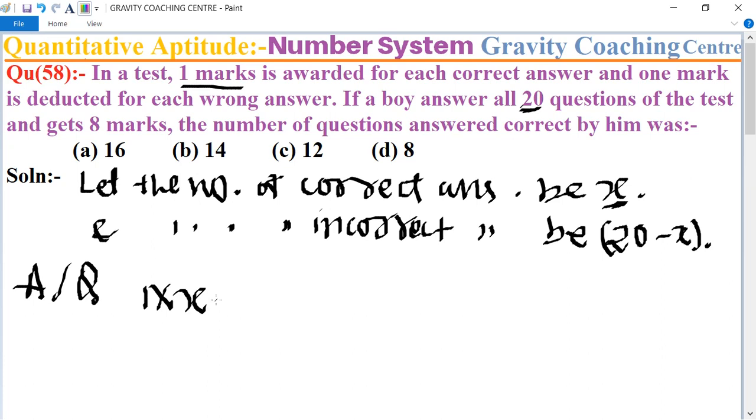And also get one marks deducted for every wrong answer. So 20 minus x multiply 1, and he got 8 marks.